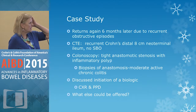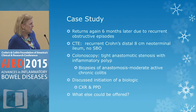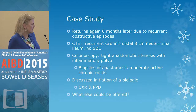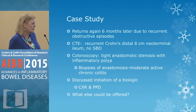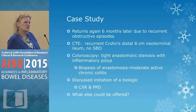About six months later she started having recurrent obstructive episodes. A CT enterography showed recurrent Crohn's in the distal 8 cm of her neoterminal ileum, but no clear evidence for obstruction. Colonoscopy revealed a very tight anastomotic stenosis and an inflammatory polyp; biopsies showed moderate active chronic colitis — not just anastomotic changes but evidence of active disease. So we started the conversation about a biologic and did a chest X-ray and skin test. What else would we want to consider at this juncture?